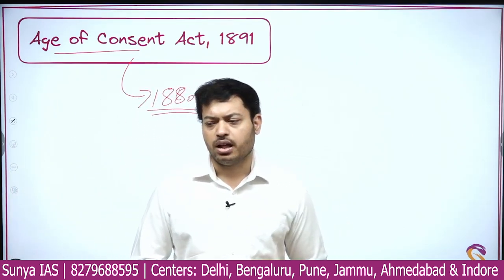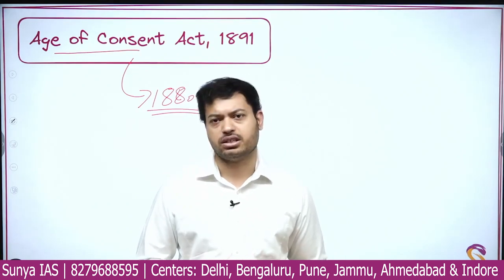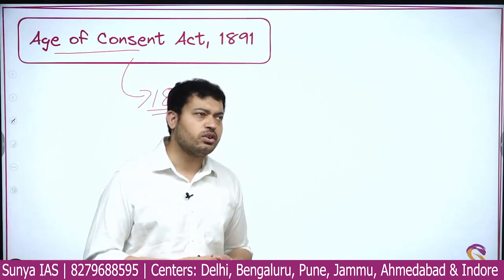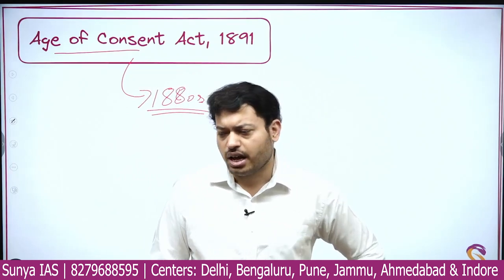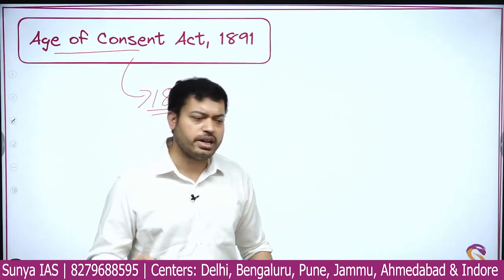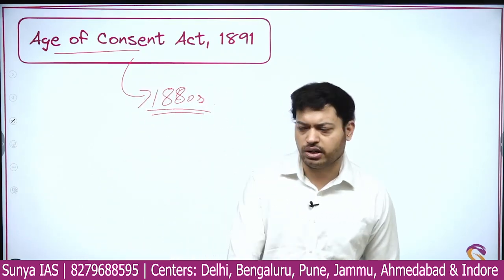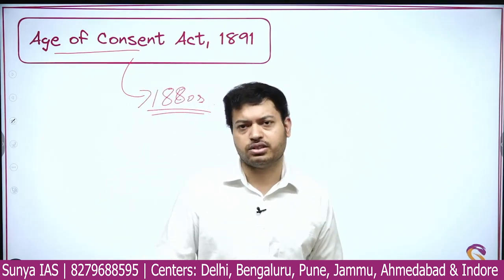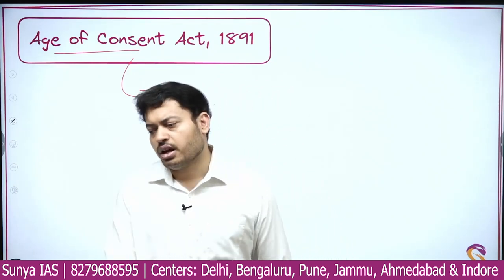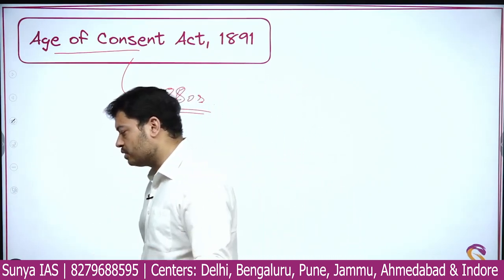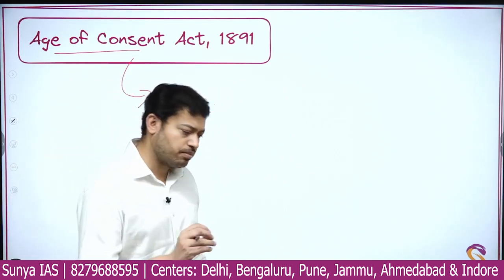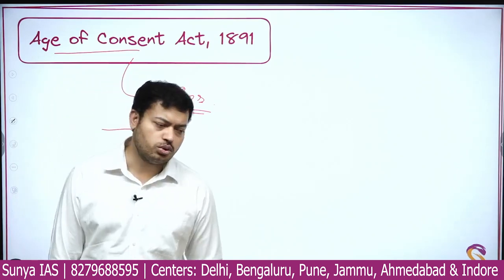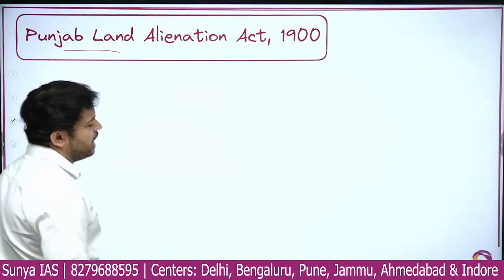The second case happened in Bengal, where an 11-year-old girl child was married to someone in his 30s, and while consummating the marriage the girl child died. It became a very big issue — is it feasible for an 11-year-old girl child to be married to a man in his 30s? That was considered wrong. A committee was formed, Behramji Malabari and others were involved, and the Age of Consent Act 1891 was passed. Because the girl who died was 11 years old, the Act made 12 years the minimum age for a girl child's marriage.